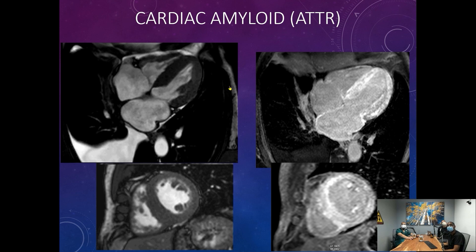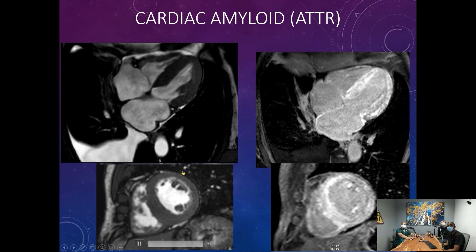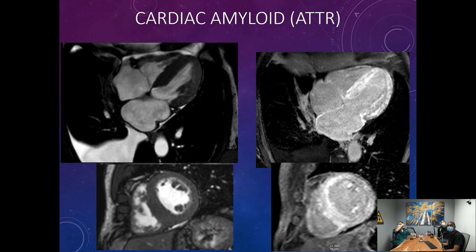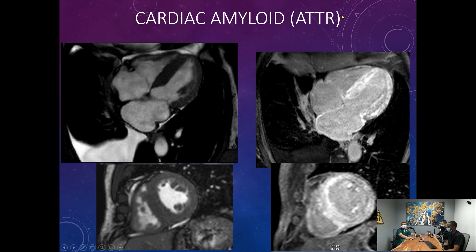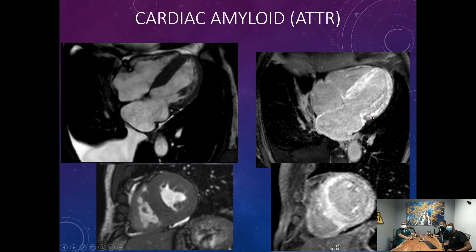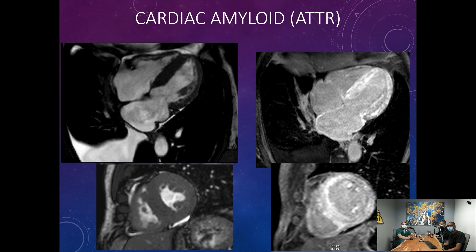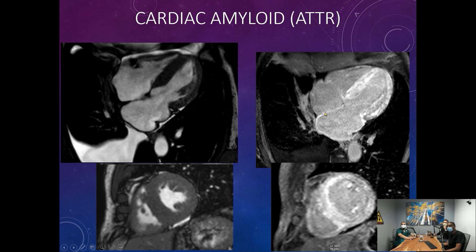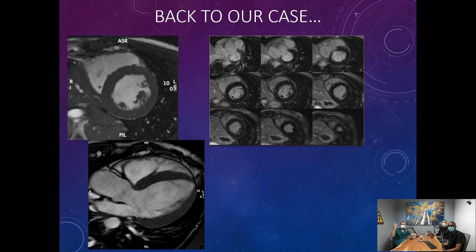For pericardial disease I'll look for constriction or ventricular interdependence using steady-state free precession free-breathing sequences. Now watch what happens when we give gadolinium to patients with amyloid — because the extracellular space is expanded, there's lots of room between structures. Gadolinium basically floods the myocardium and enhances it diffusely. This is an extreme form of cardiac amyloid, and these patients have a quite poor prognosis.